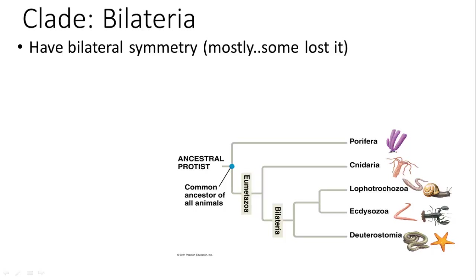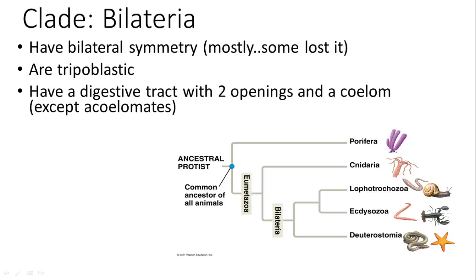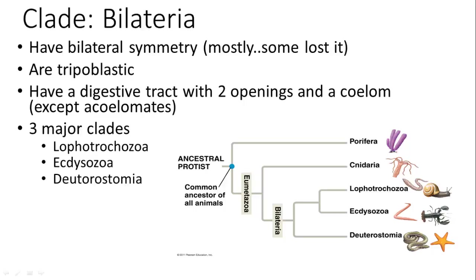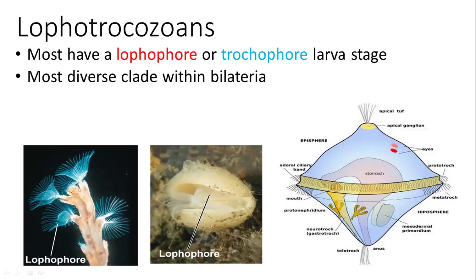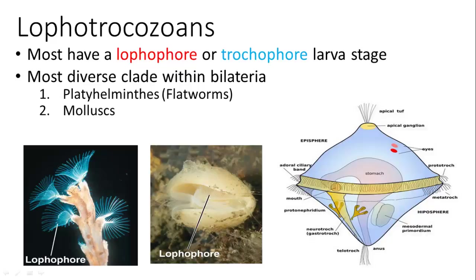Within Bilateria, animals have mostly bilateral symmetry — though some have lost it — are all triploblastic, and have a digestive tract with two openings and a coelom, except for acoelomates. There are three major clades: Lophotrochozoa, Ecdysozoa, and Deuterostomia. Lophotrochozoans have the lophophore or trochophore larva. The three phyla we'll cover as lophotrochozoans are Platyhelminthes, Mollusca, and Annelida.